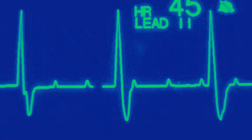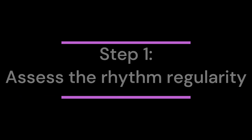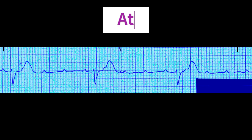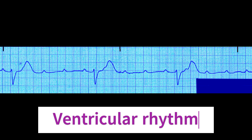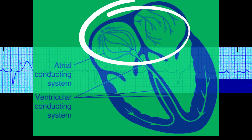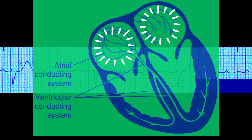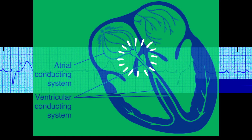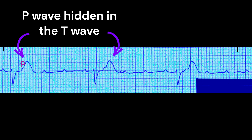Now let's discuss the steps to analyze an EKG tracing of third-degree heart block. Step 1: Assess the Regularity of the Rhythm. There are two distinct rhythms — the atrial rhythm and the ventricular rhythm — reflecting the complete dissociation between the upper and lower halves of the heart. The sinus node stimulates the atria at a regular rate, while the AV bundle controls the ventricles at its own regular rhythm, so the P-to-P intervals and the R-to-R intervals will each be consistent.